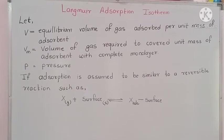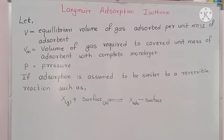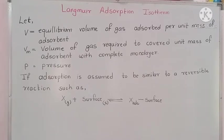If adsorption is assumed to be similar to a reversible reaction, adsorption is the opposite reaction of desorption. We can write it as: X (gas molecules) plus a solid surface — if adsorption occurs, X gas molecules adsorb on the surface. Since the reaction is reversible, desorption also occurs, and X adsorbate molecules are released from the surface. A dynamic equilibrium is eventually established between the two opposing processes, adsorption and desorption.